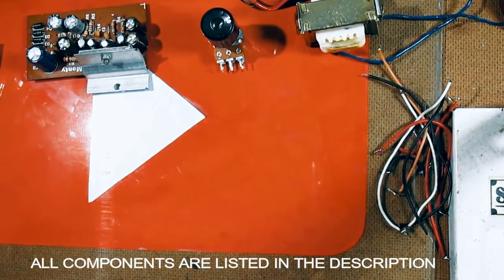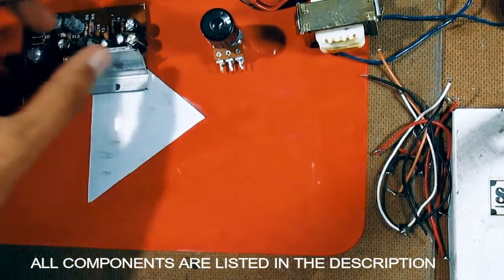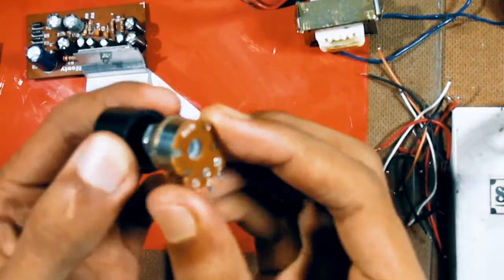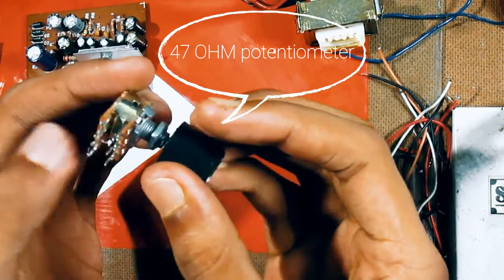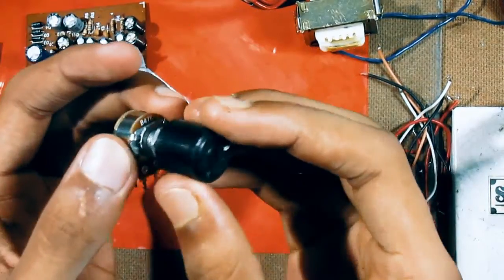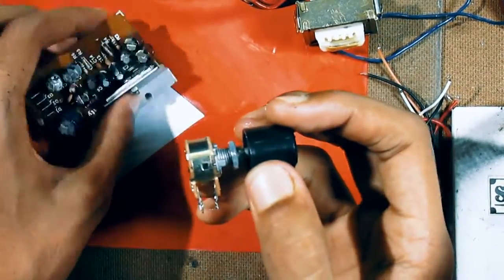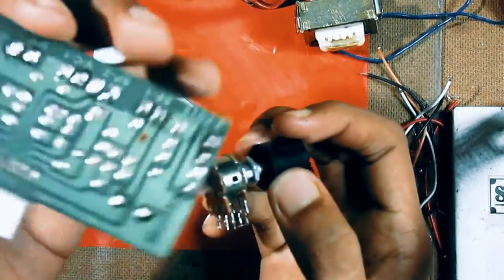So, firstly, let's go through the list of components. First up, we have this, which is a dual channel potentiometer, which is also known as the volume control. We will be using this to control the volume of the 6233 IC based audio amplifier.